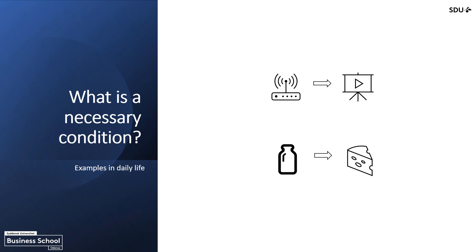Another example: milk is necessary for making non-vegan cheese. Having just the milk is probably not enough, because there are many other things needed to make cheese. But not having milk means we will not have cheese. A necessary condition is therefore an enabler, but it is also a bottleneck.